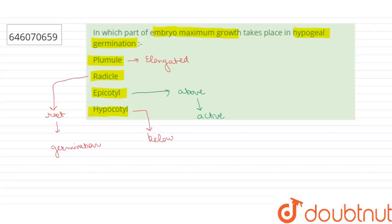The epicotyl is the most active region in hypogeal germination. Maximum growth takes place in the epicotyl, so the right answer is option number three.